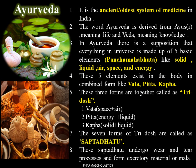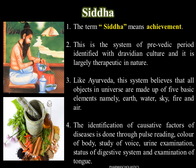These three doshas form seven body tissues called Saptadhatu, which undergo various processes and form excretory material or mala. The term Siddha means achievement. This is the system of the pre-Vedic period, identified with Dravidian culture, and is largely therapeutic in nature. Like Ayurveda, this system believes all objects in the universe are made up of five basic elements: earth, water, sky, fire, and air. Diagnosis is done through pulse reading, color of the body, study of voice, urine examination, status of the digestive system, and examination of the tongue.